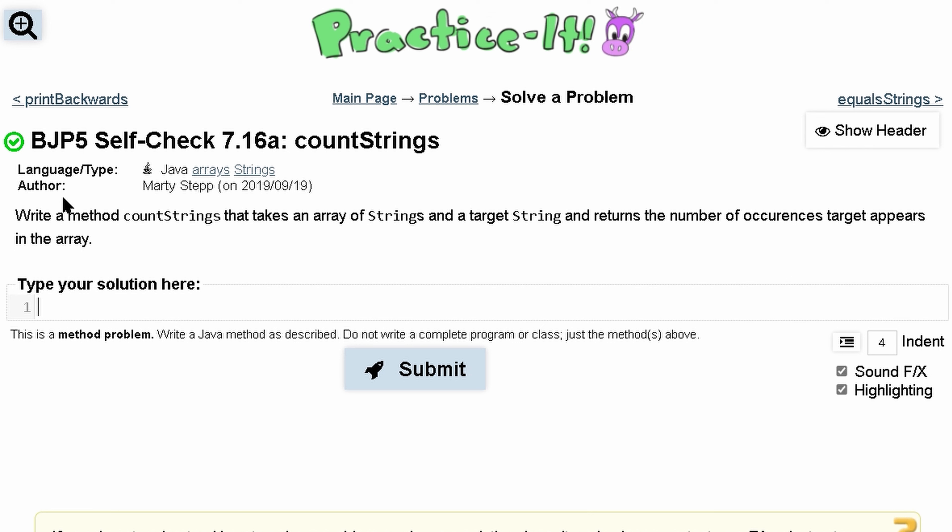For this practice self-check 7.16a countStrings, we want a method countStrings that takes an array of strings and a target string, and returns the number of occurrences the target appears in the array.